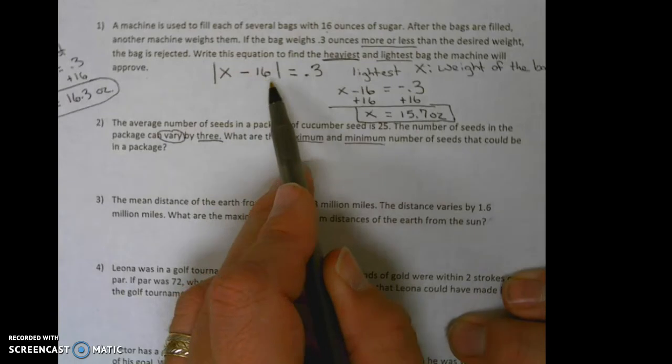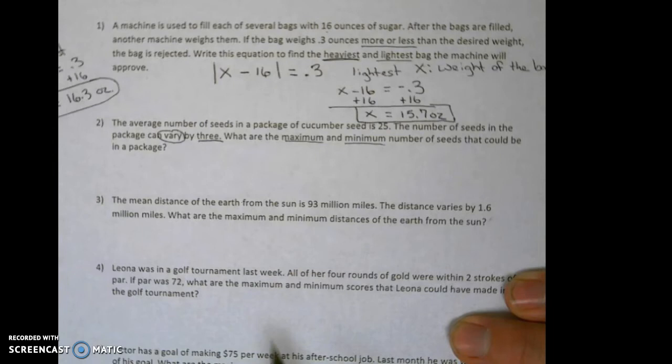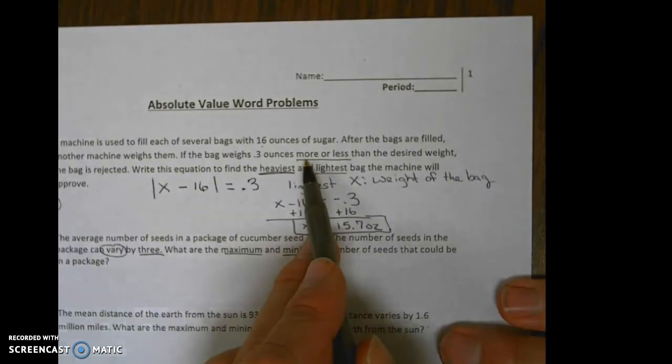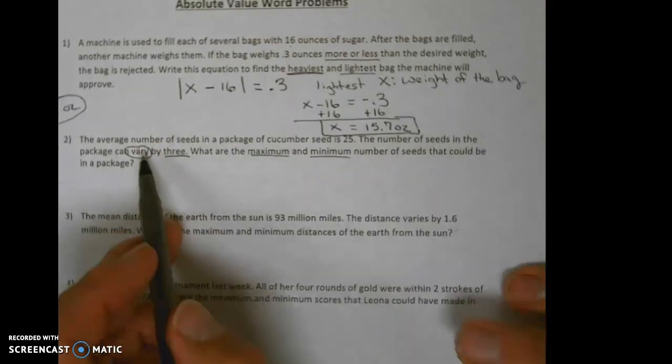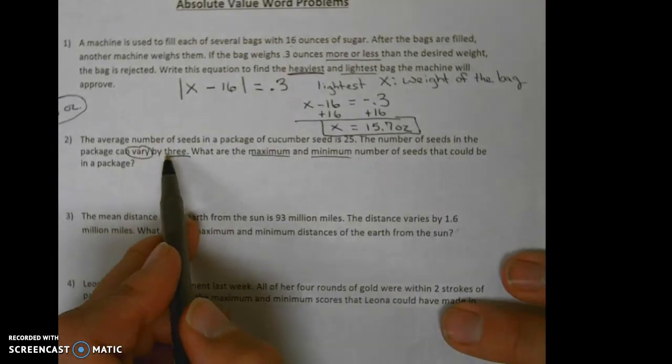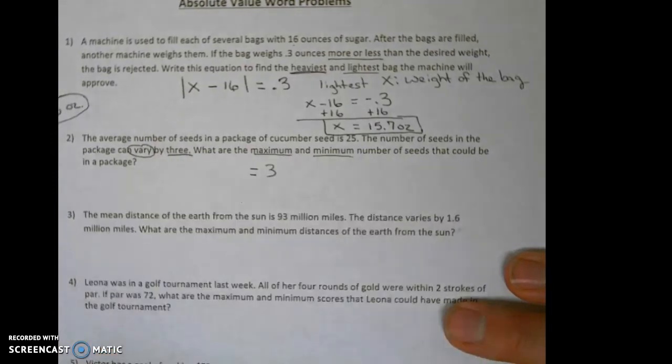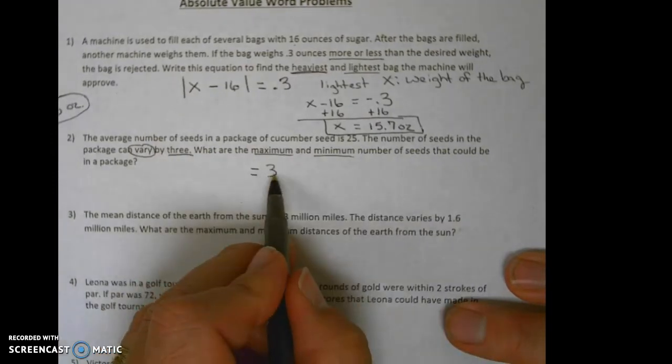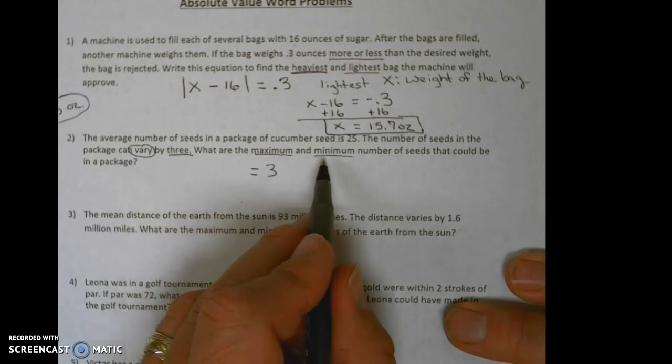Basically, this is going to be your template for setting up the rest of these. Right away here, they didn't say very, they said more or less—more or less 0.3 ounces here. The variance is three, so obviously we're going to be setting this equal to three. We can be three above, which would be the maximum, or we could be three below, which would be the minimum.